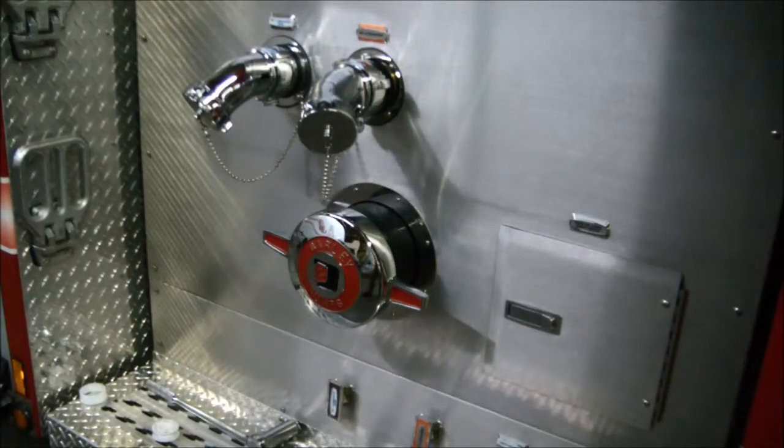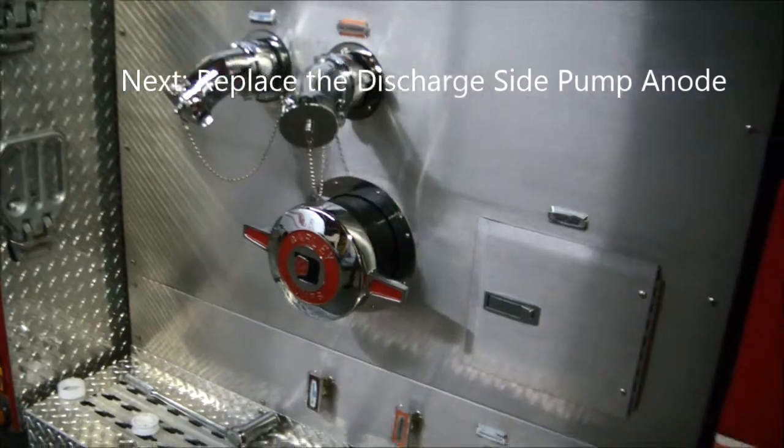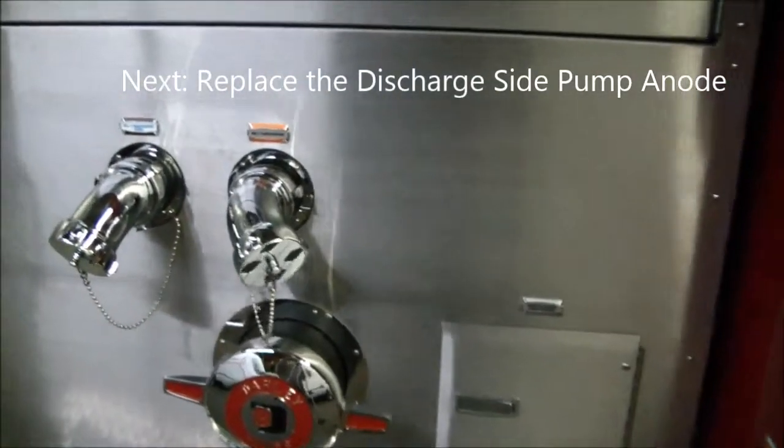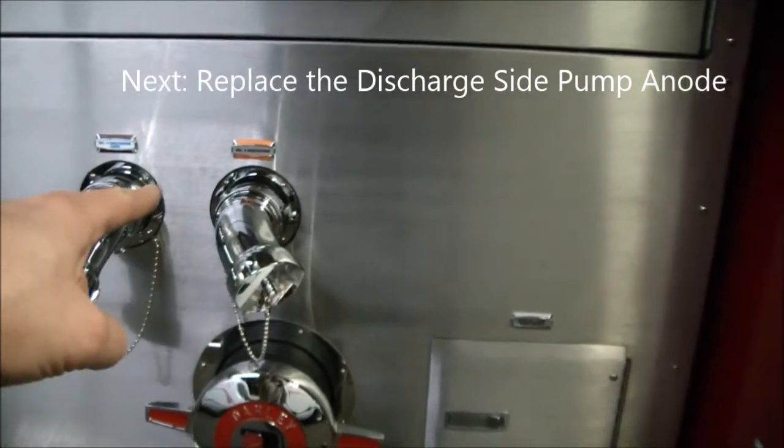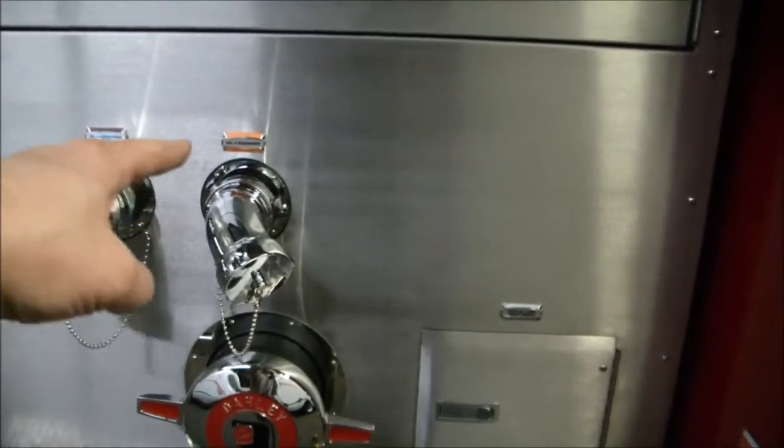Now we'll do the discharge side pump anode here next and it is located inside the pump compartment here on the discharge extension that feeds this number three discharge.